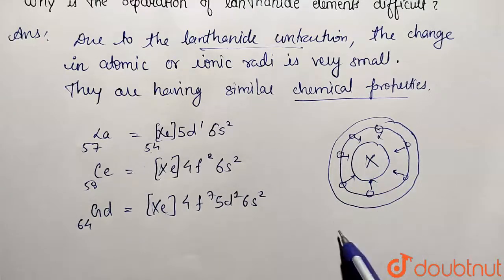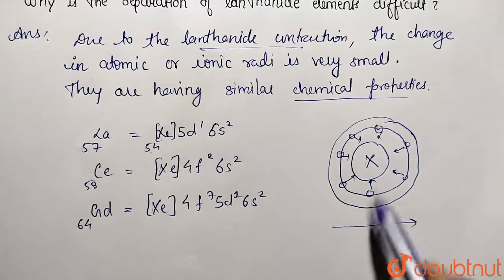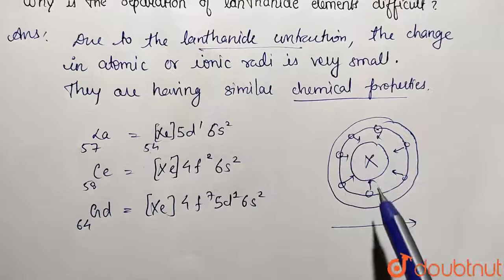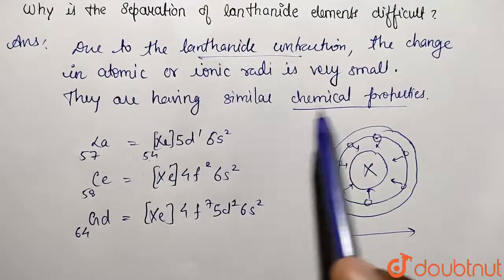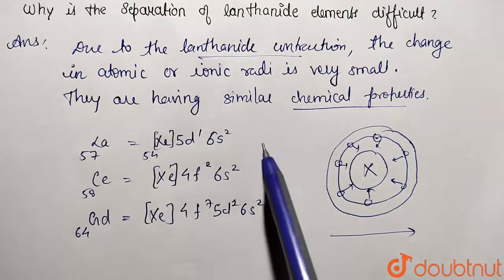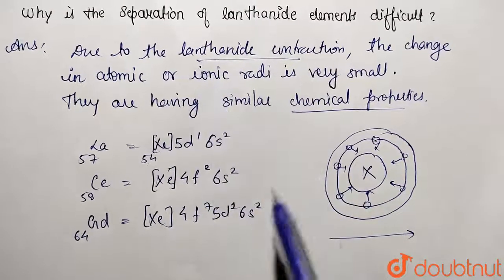Then correspondingly size tends to be decreasing as we move along the period. So due to this lanthanide contraction, which is the phenomena, the sizes are nearly same. And they are also showing similar chemical properties, due to which the separation is very very difficult.